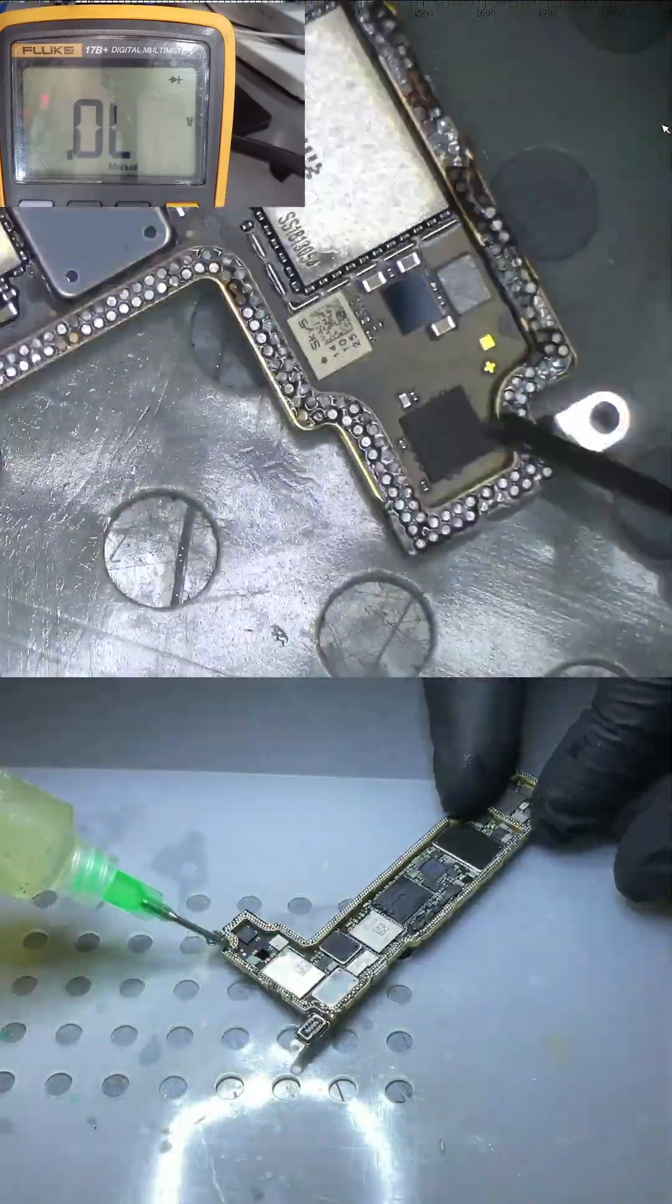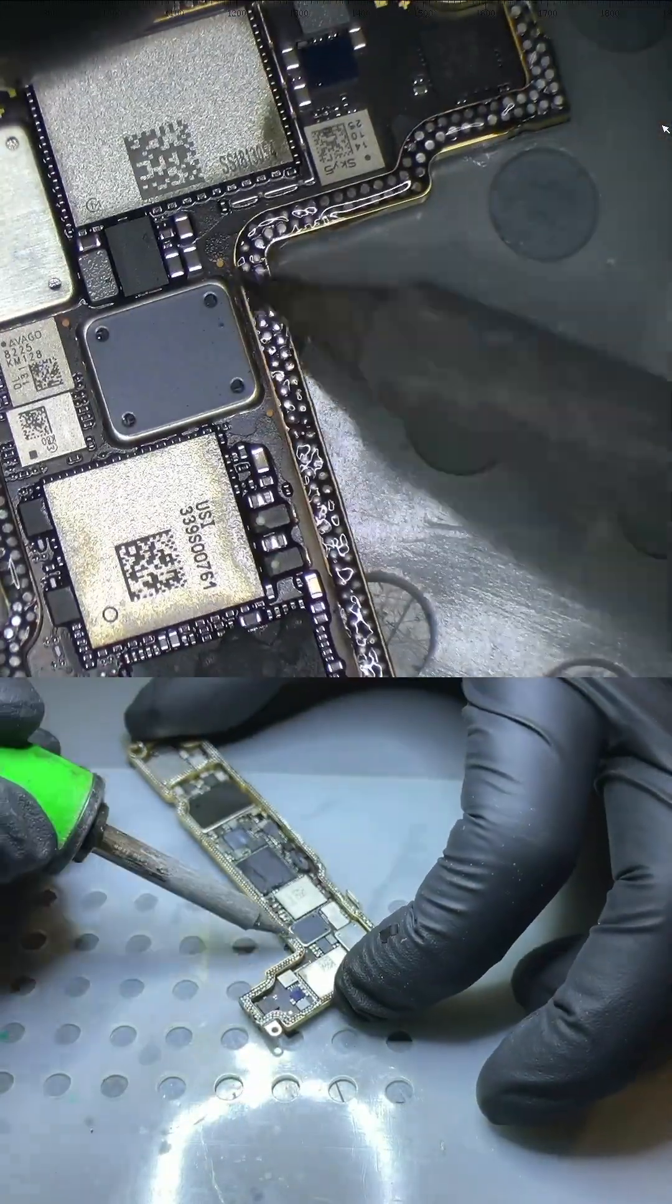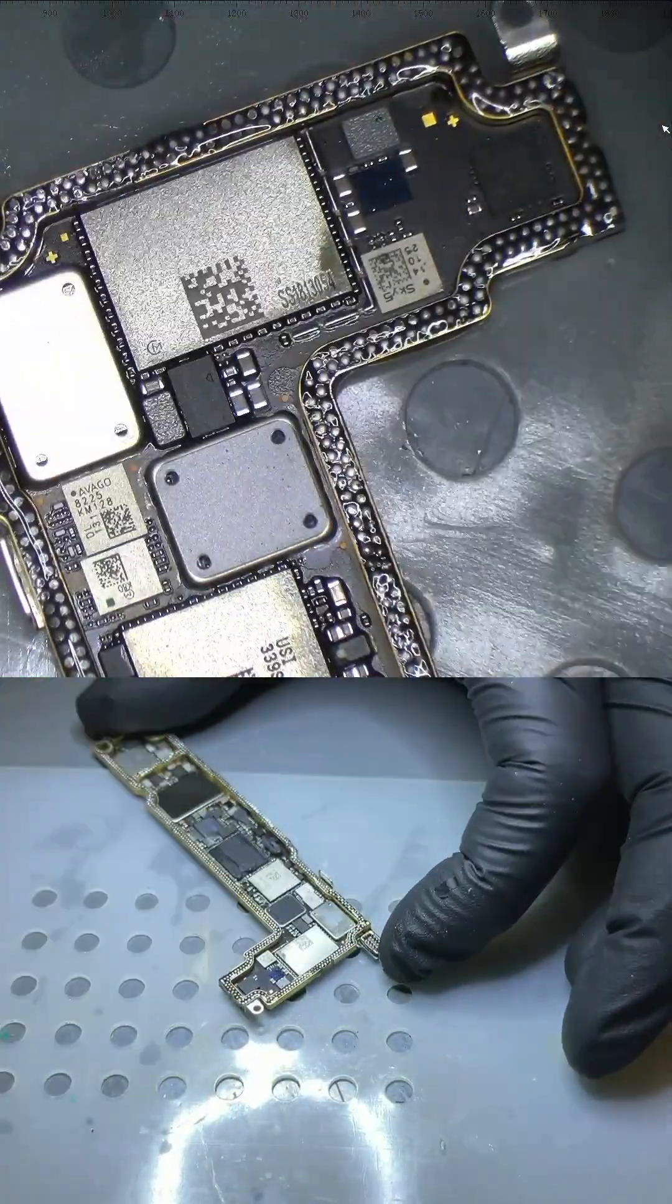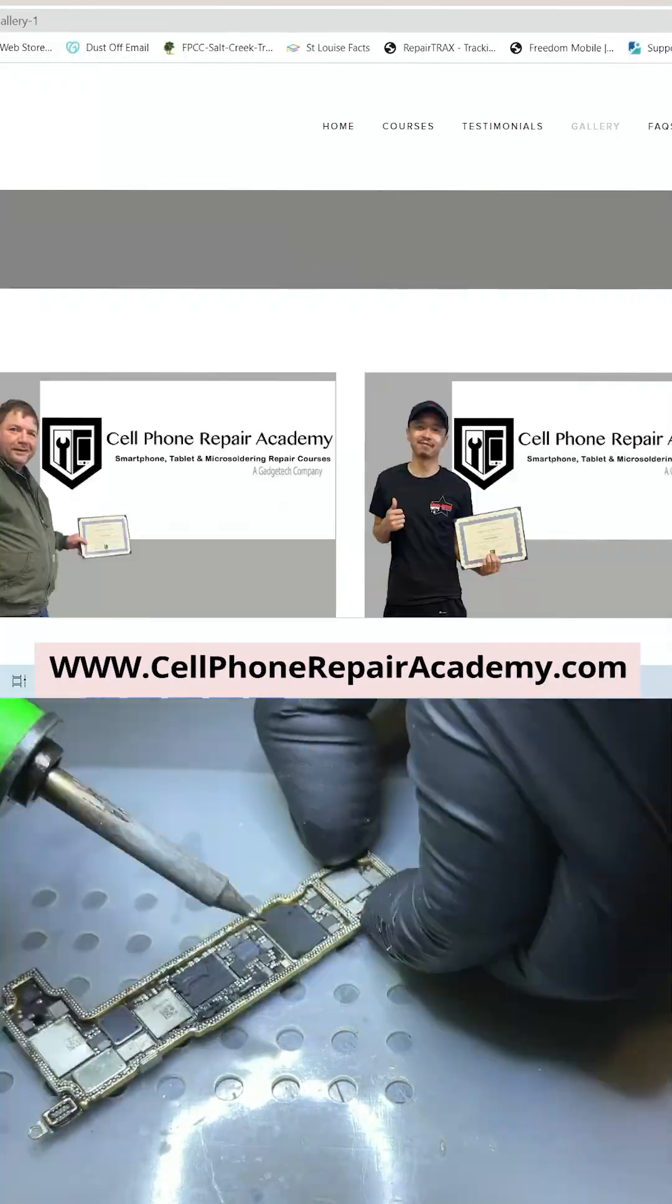Now we get the lower layer motherboard and repeat the same procedure. We use solder and flux around the perimeter and then follow through with the solder wick. Once that is completed, we use alcohol to clean any leftover residue.